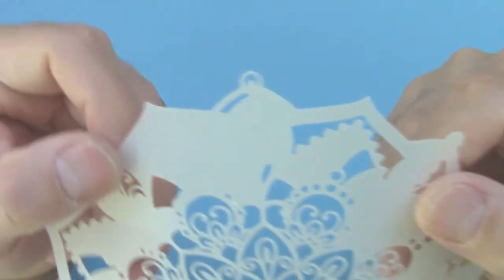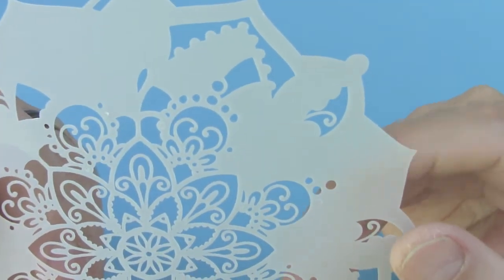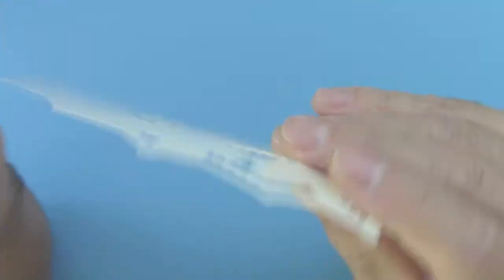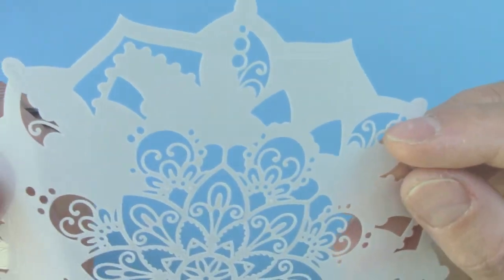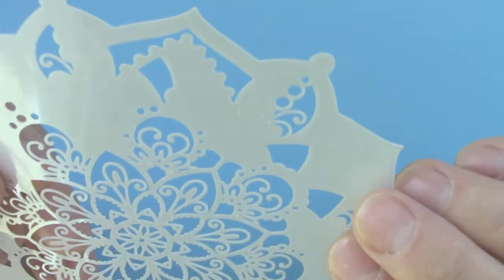Here you can see a stencil I left unsupervised, and what happened was that a small piece of plastic got stuck on the blade, and it never cut through. It just scratched the surface, as you can see here. So make sure to stay by your machine while cutting.